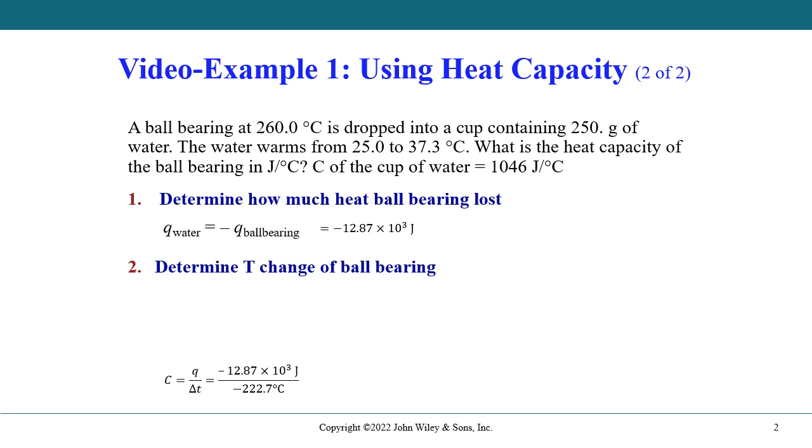We then can determine the temperature change of the ball bearing, where we know the initial and final temperatures as given. So the temperature change can be calculated to be negative 222.7 degrees. A negative temperature change is obviously allowed because this is a heat loss.